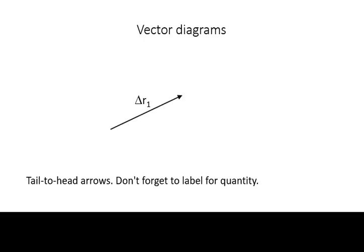In vector diagrams, we represent the vector with an arrow labeled with the quantity's symbol. In this case, the quantity is a displacement.